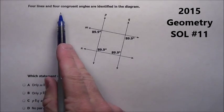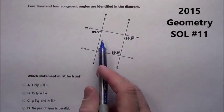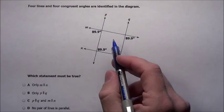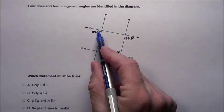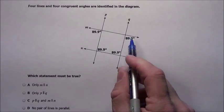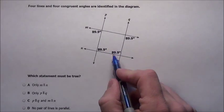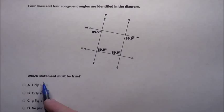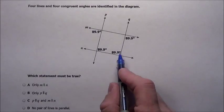Problem 11 says four lines and four congruent angles are identified in the diagram. Basically this corner is 89.9, 89.9, 89.9, 89.9. So there your four pieces are all similar to one another. It says which statement must be true given this information?